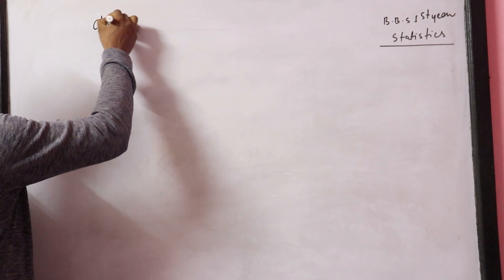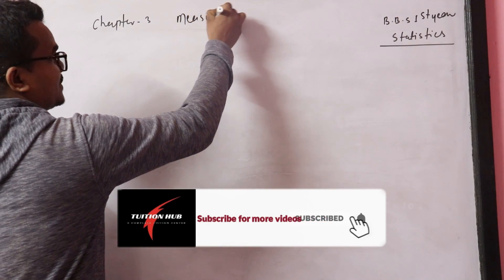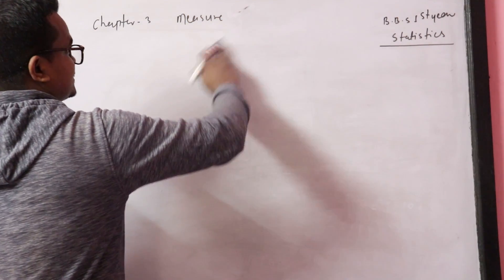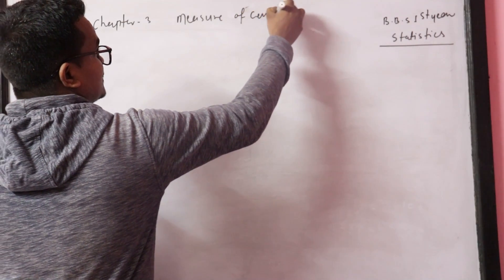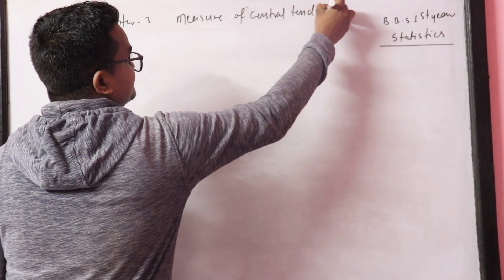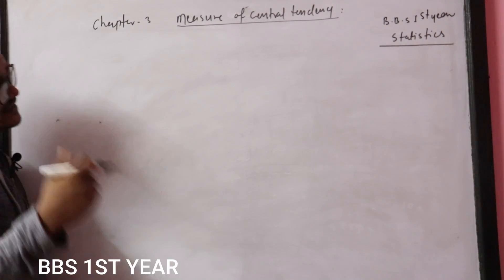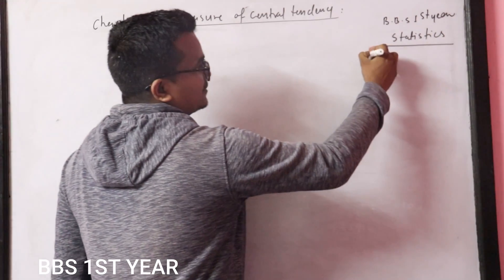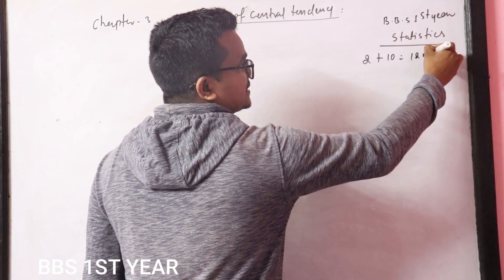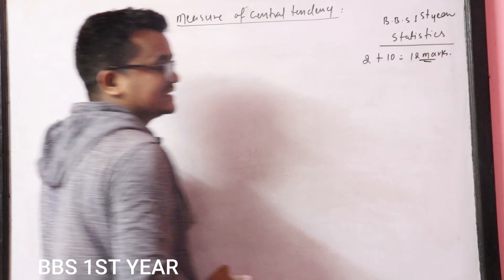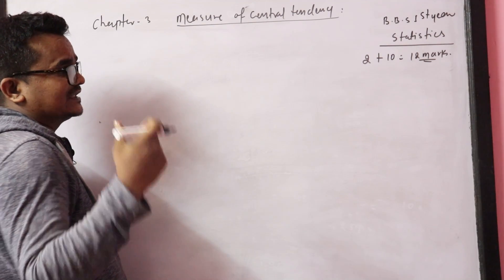Chapter 3 — chapter name is Measures of Central Tendency. In the board exam, 10 marks for long questions or 2 marks for short questions, totally 12 marks sure. So I think I will try the long question first.